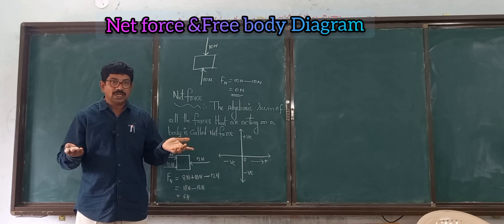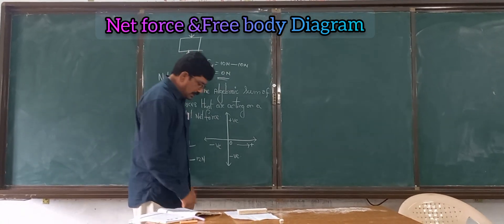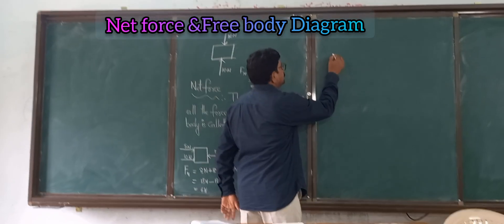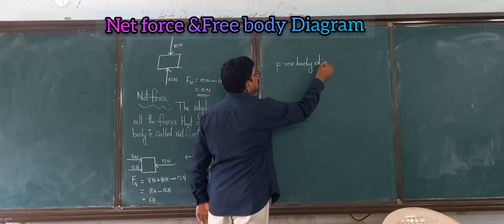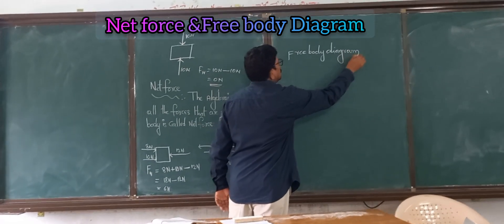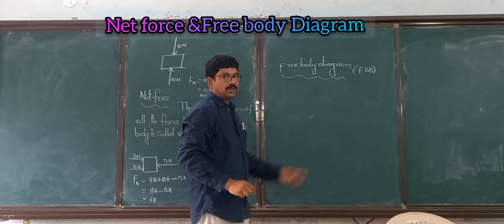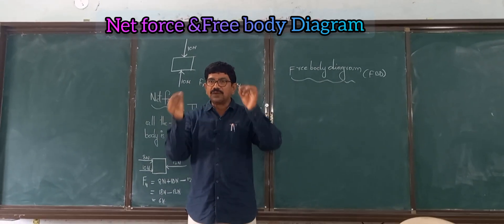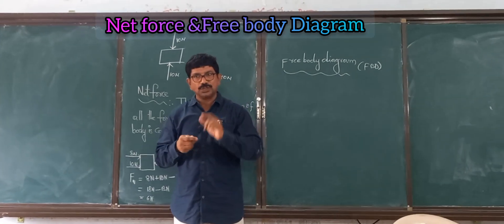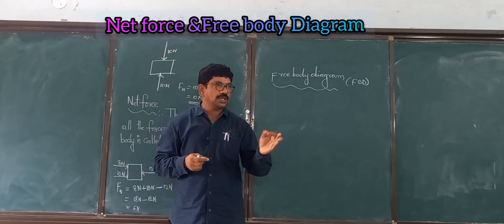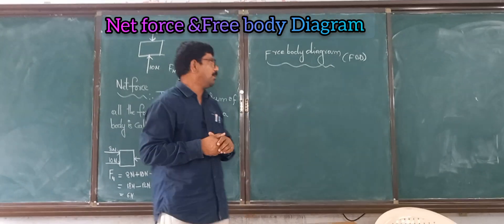The body always moves in the direction of the net force. Now let us learn what is meant by a free body diagram and how to draw it. A free body diagram, or FBD, is a diagram which shows all the forces acting on a body — it is the visualization of all forces acting on a body.